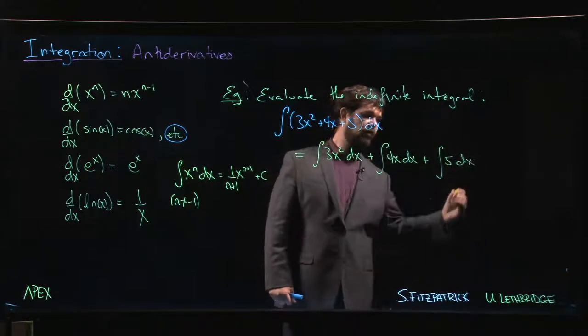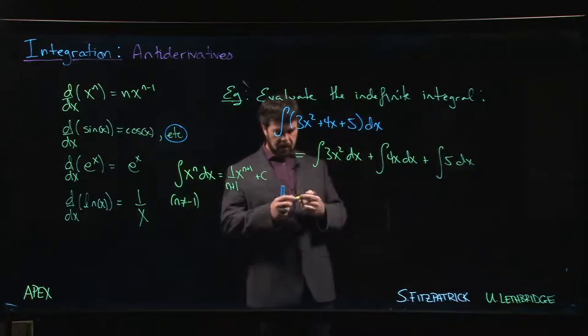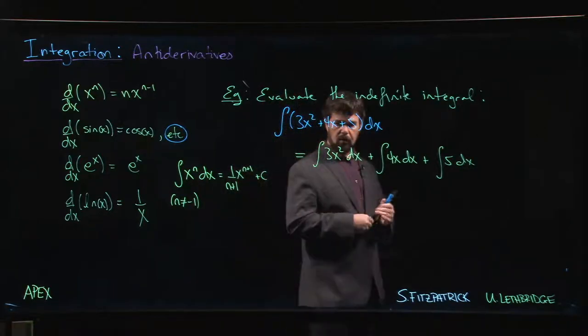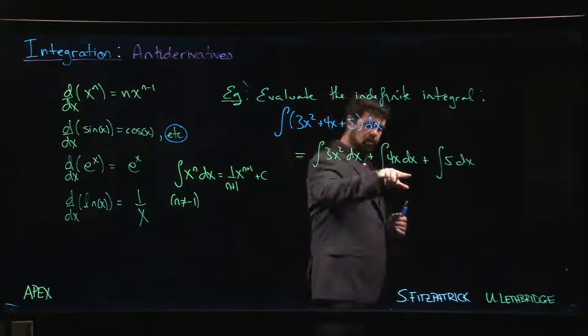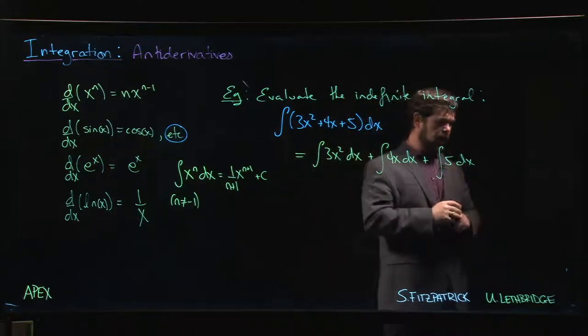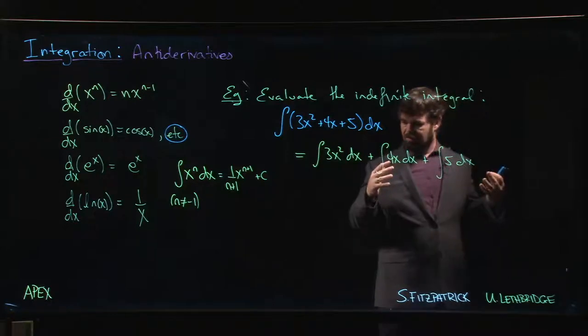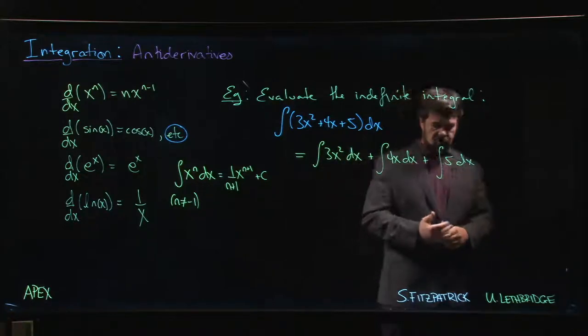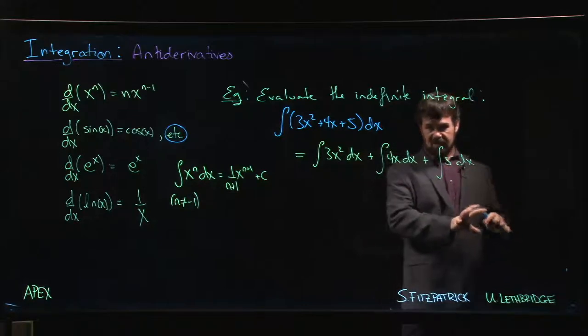And write something like that. And now when you get to here, you might be a little bit concerned because you say, now when I do this one, I'm going to get a plus C. When I do this one, I'm going to get a plus C, but probably a different C. And again, for that one. But adding three constants together still gives you a constant. So you can just put one plus C at the end.